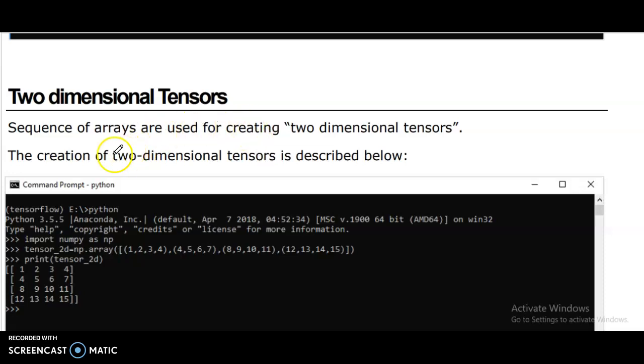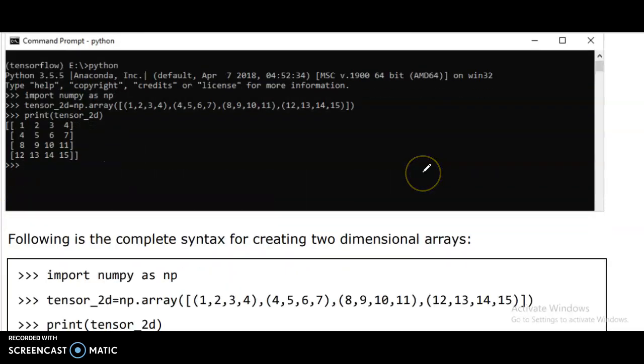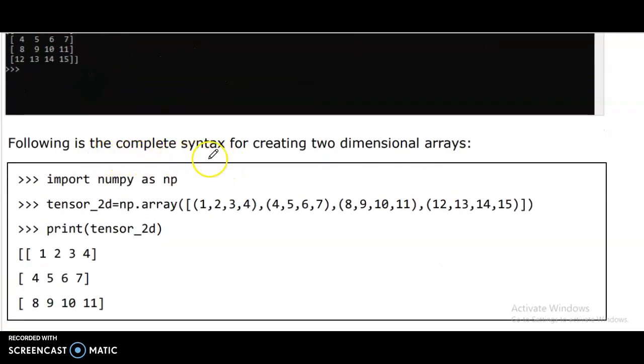Two-dimensional tensor. Sequence of arrays are used for creating two-dimensional tensor. The following is the syntax for creating dimension arrays: tensor 2D equal to np.array.